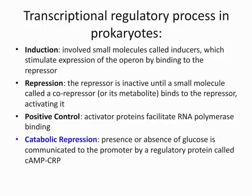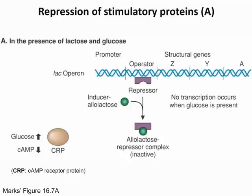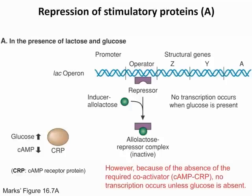Next we have catabolite repression. The presence or absence of glucose affects transcription. If there is an increase of glucose in the body, no transcription occurs. If we don't have glucose, the inducer allolactose binds to the repressor, making it inactive. With the repressor inactive, RNA polymerase can bind to the promoter and begin transcription.